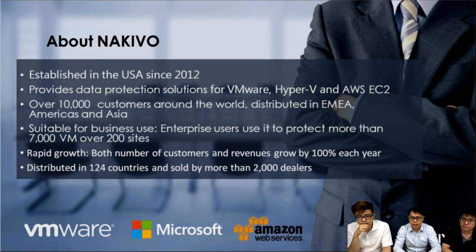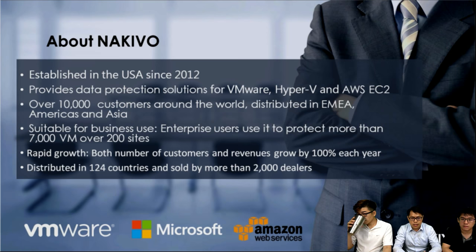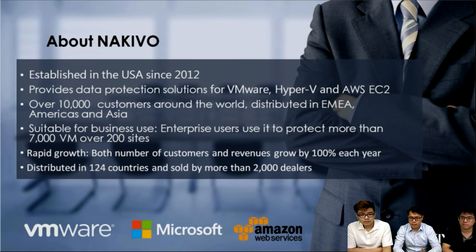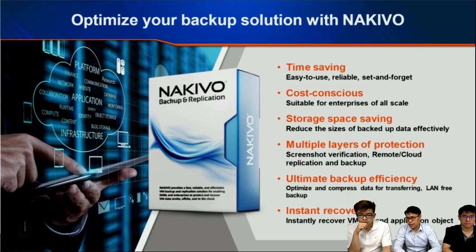Nakivo was established in the USA in 2012. It's a relatively new company that provides data protection solutions especially for VMware, Hyper-V, and AWS EC2. They have over 10,000 customers around the world including EMEA, Americas, and Asia, protecting more than 7,000 VMs over 200 sites. The company has had rapid growth with revenue and customer numbers growing 100% each year, distributed in 124 countries and sold by more than 2,000 dealers.